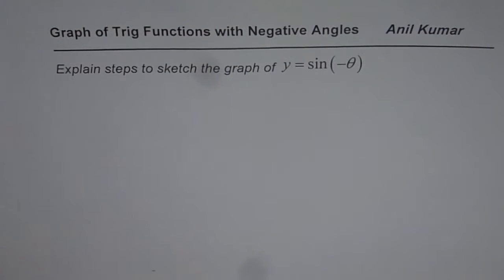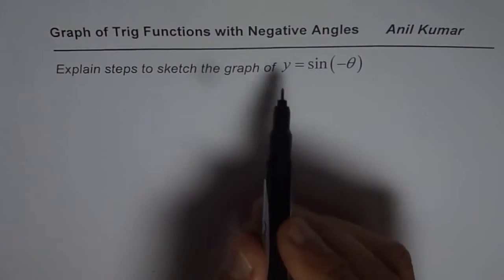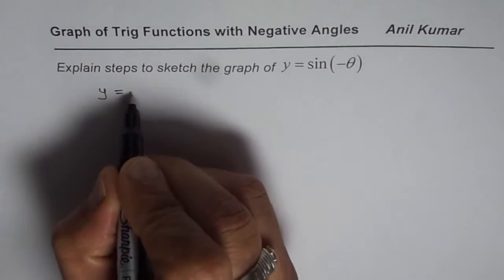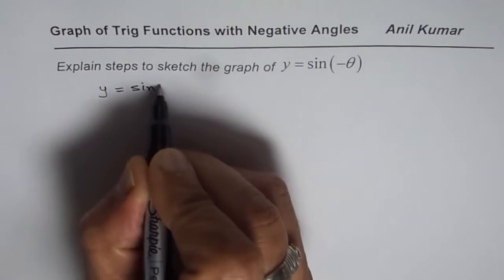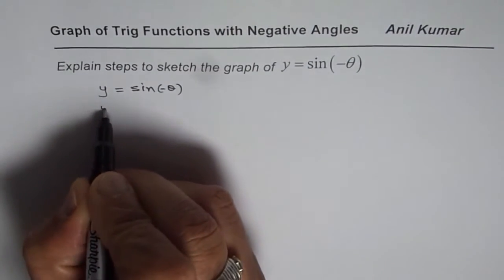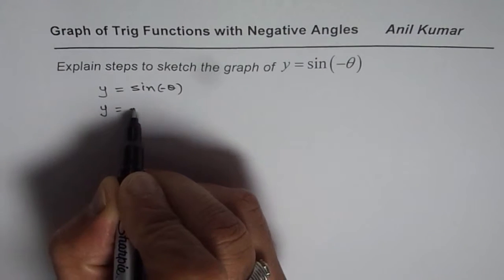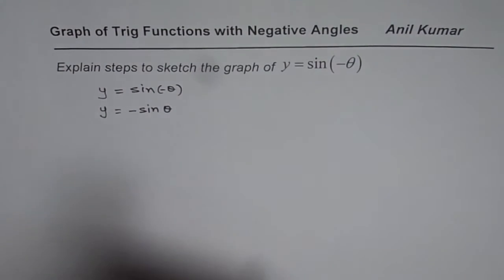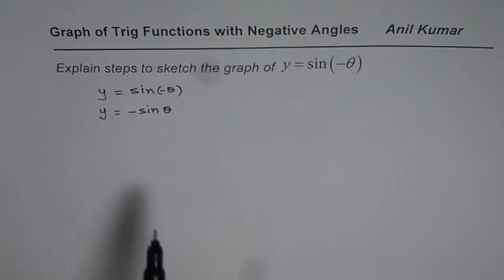A very simple question indeed. Now, how do we look at it? When we have y equals sin minus theta, we could see this question as y equals sin of minus theta could be written as y equals minus sin theta. So, sin of minus theta is minus sin theta.